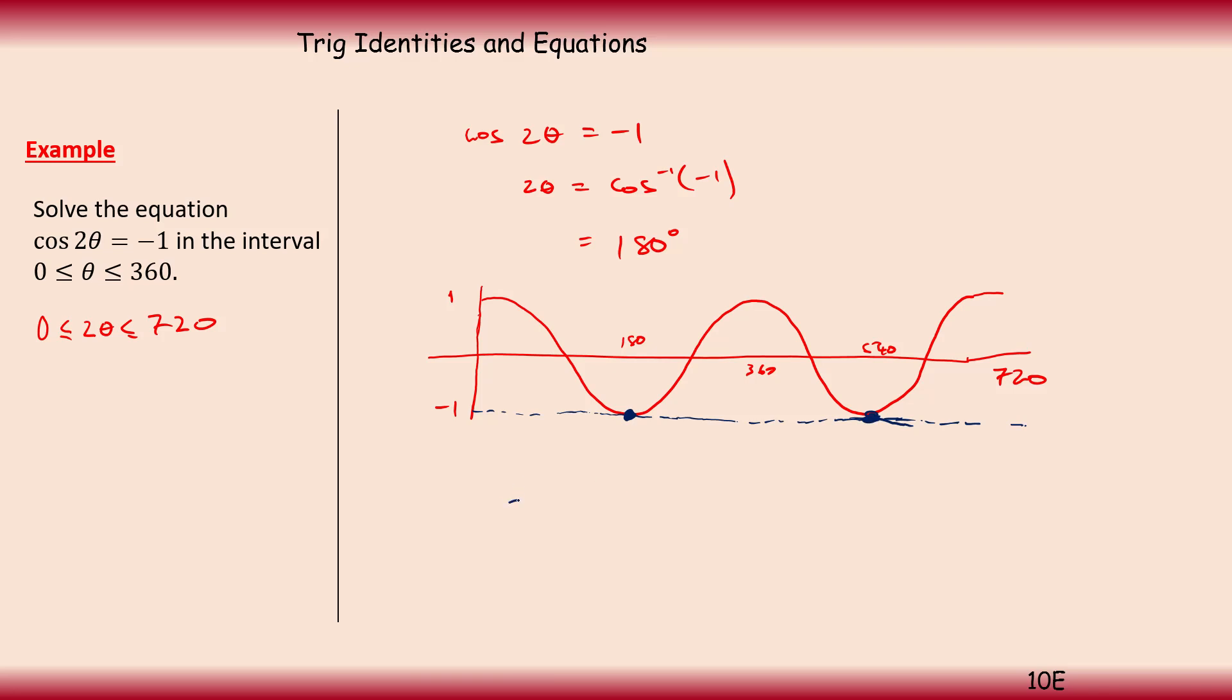So we can say 2θ is equal to 180 and 540. The next one would be 900, but that's irrelevant. That's outside our 720. So 2θ goes up to 720. Now we can find θ is equal to, we halve the values, 180 divided by 2 or 540 divided by 2. And that gives us 90 degrees and 270 degrees, our solutions. So those are our solutions that lie between 0 and 360 for θ, but we've had to double them for our range.